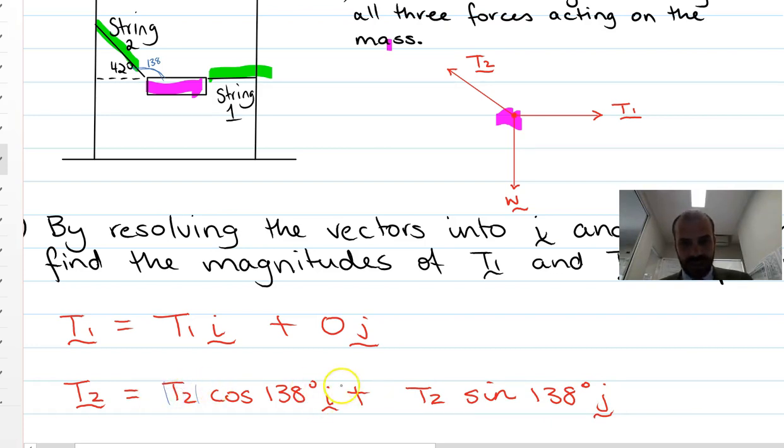Cos 138 in the i component and sine 138 in the j component. This t2 here, that's the magnitude of the tension there. And so what we're doing is breaking it up into its x component and into its y component. So we need to know the magnitude there.